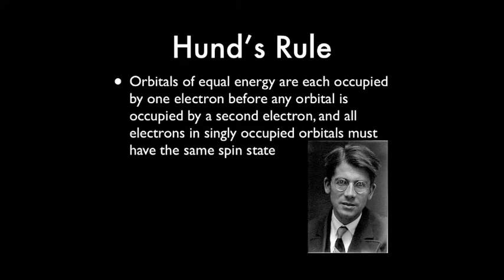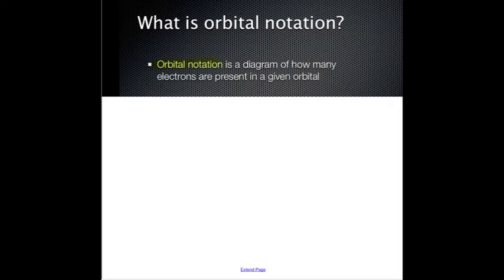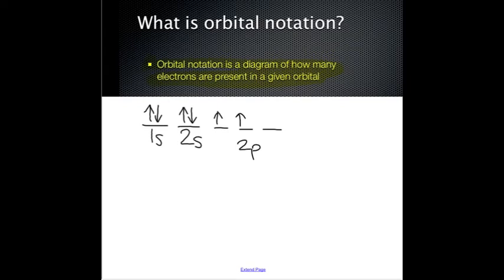So basically, what this means is that when drawing an orbital notation diagram, each orbital must be filled with an arrow pointing in the same direction before it is paired with another electron in that orbital. In carbon's orbital notation, you can see that there are two unpaired electrons in the 2p orbital. Carbon's diagram is clear evidence of Hund's rule.